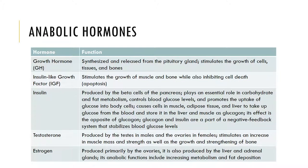Some of the anabolic hormones are shown here: growth hormone, insulin-like growth factor, insulin, testosterone, and estrogen. Growth hormone is synthesized and released from the pituitary gland and has an impact on most cells of the body, particularly bones and muscle. Insulin-like growth factor stimulates the growth of muscle and bone, but also inhibits cell death.